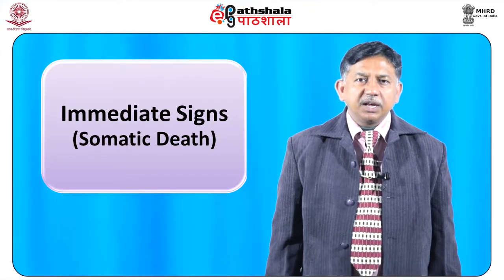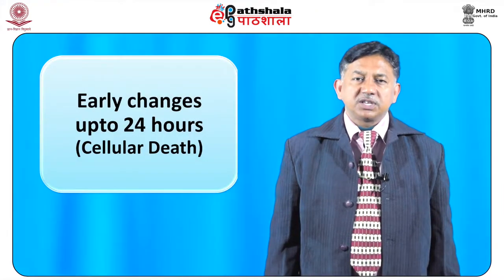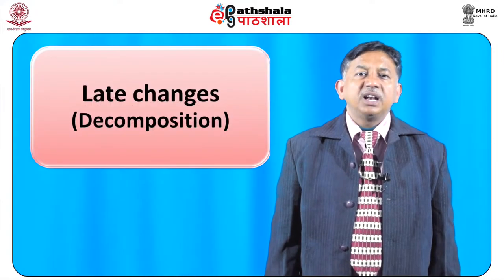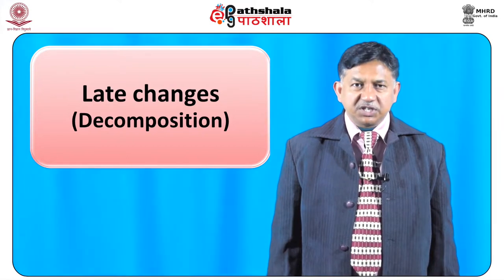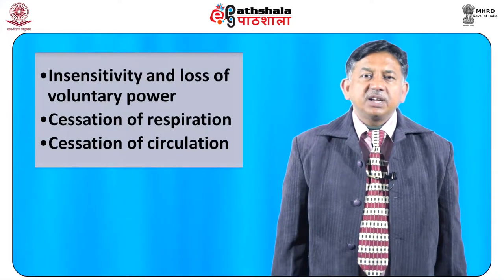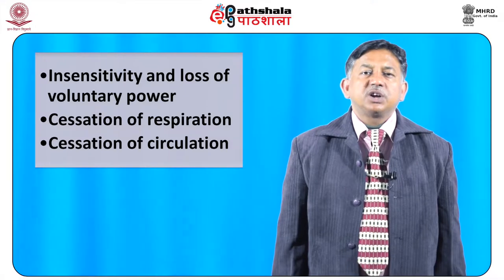The changes that take place are helpful in estimation of the approximate time since death. The signs of death appear in this order usually: three immediate signs which occur immediately, also called somatic death; early changes after death which occur up to 24 hours, also called cellular death; and late changes or decomposition changes. The immediate signs include insensitivity and loss of voluntary power, cessation of respiration, and cessation of circulation.